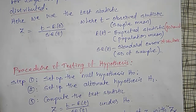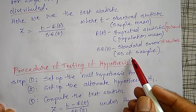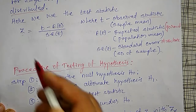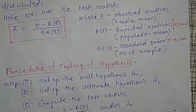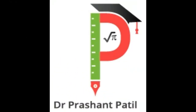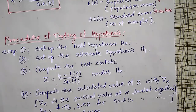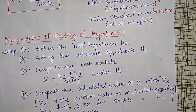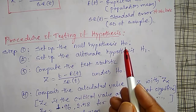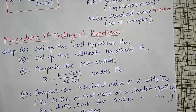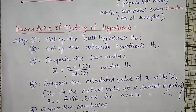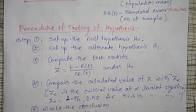Now, the steps to follow for testing of hypothesis are important so that all your problems will be solved uniformly. First, set up the null hypothesis H₀. The null hypothesis is our initial assumption. The alternate hypothesis H₁ is anything other than the null hypothesis.